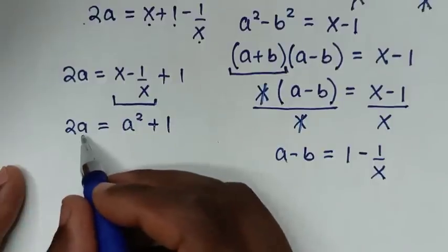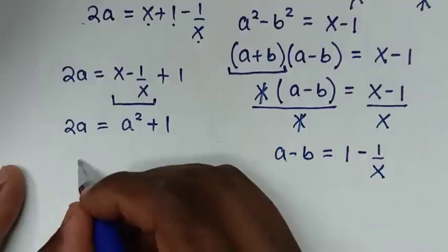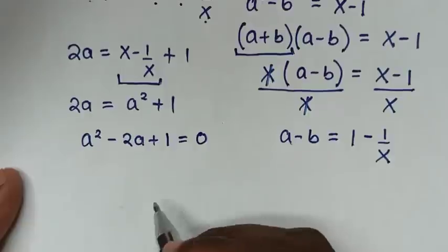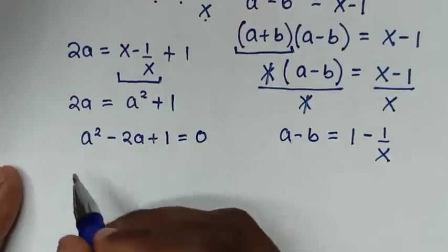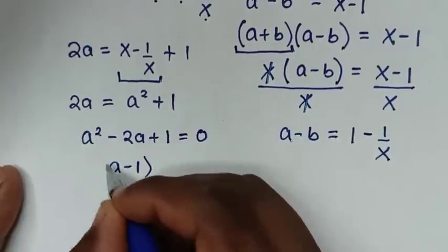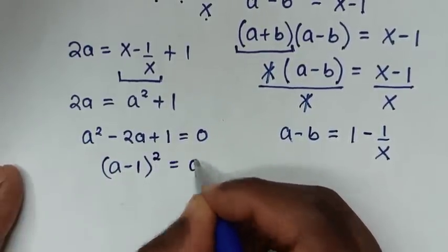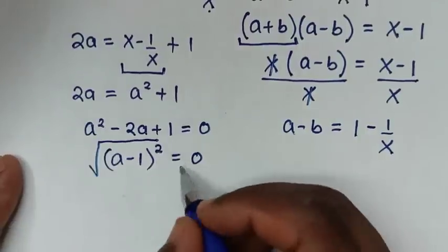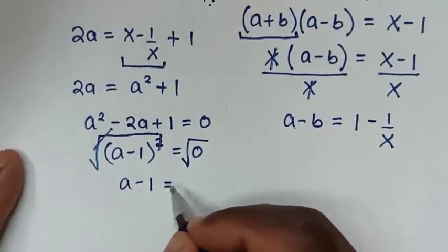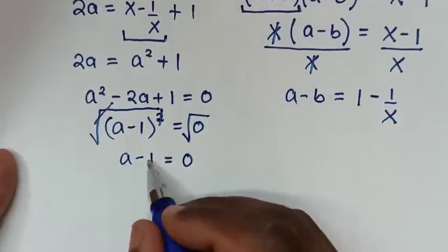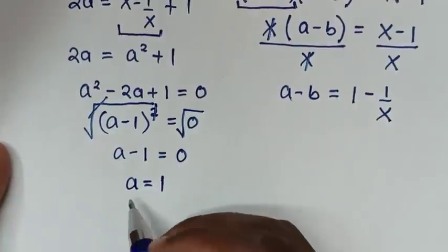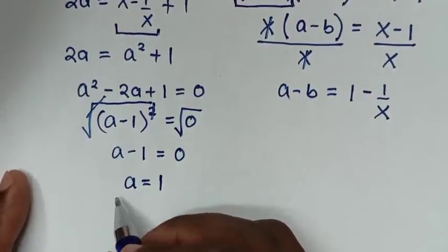We take 2a to the right side, giving a squared minus 2a plus 1 equals 0. This quadratic factors as (a minus 1) squared equals 0. Applying a square root on both sides, a minus 1 equals 0, so a is equal to 1.